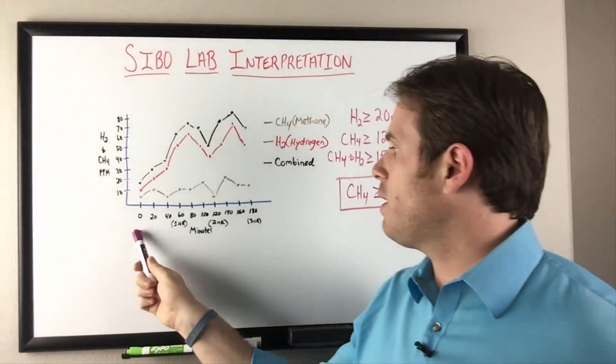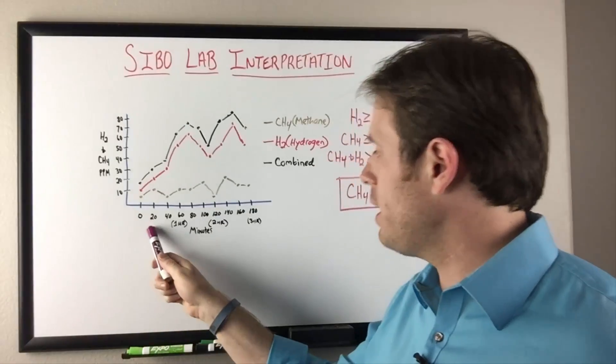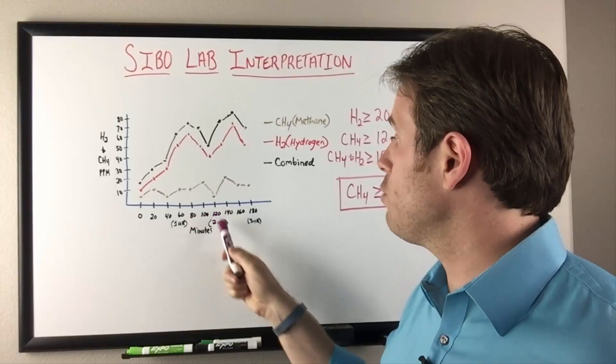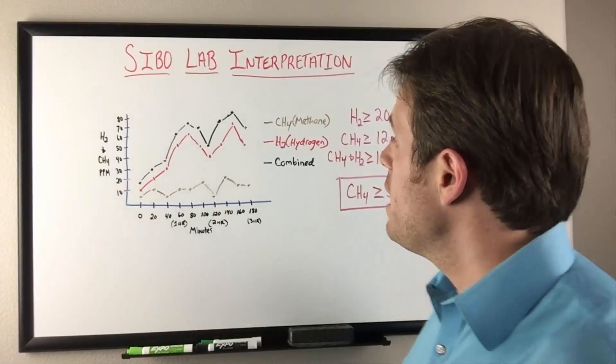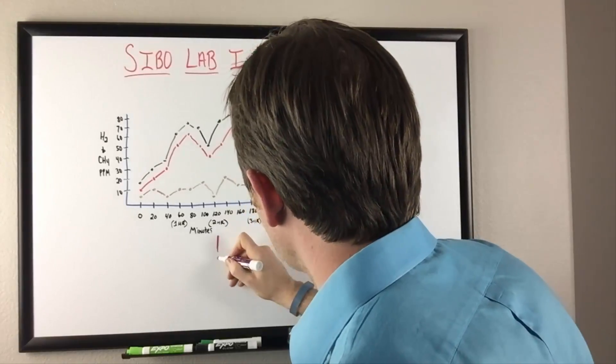We start out here with 10 different samples. The first sample will be at zero minutes, then 20, 40, 60 which is our one hour point, 80, 100, 120 which is our two hour point. Most lab tests like the Genova test stops there.